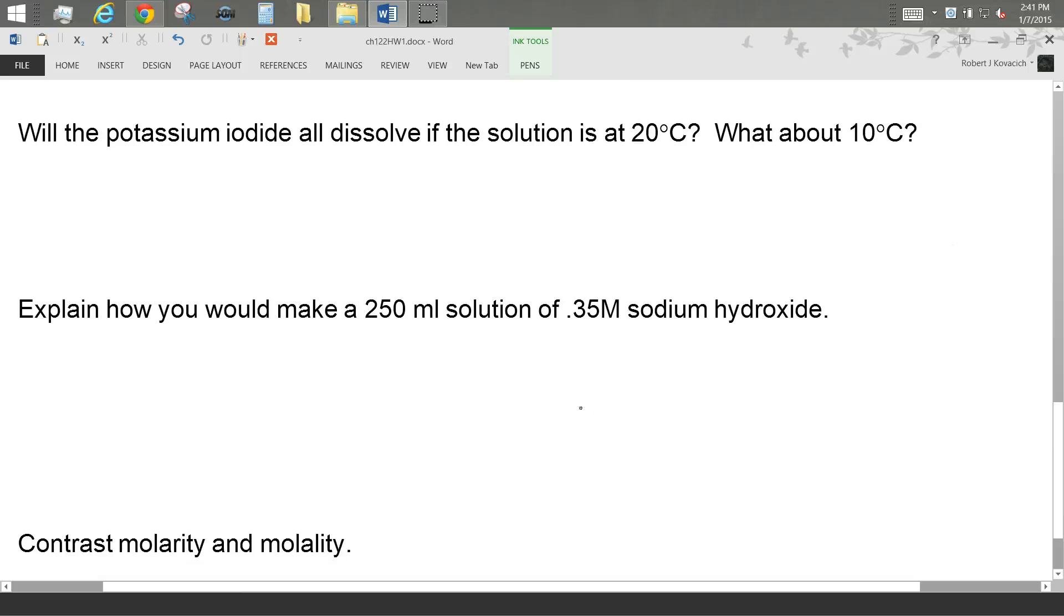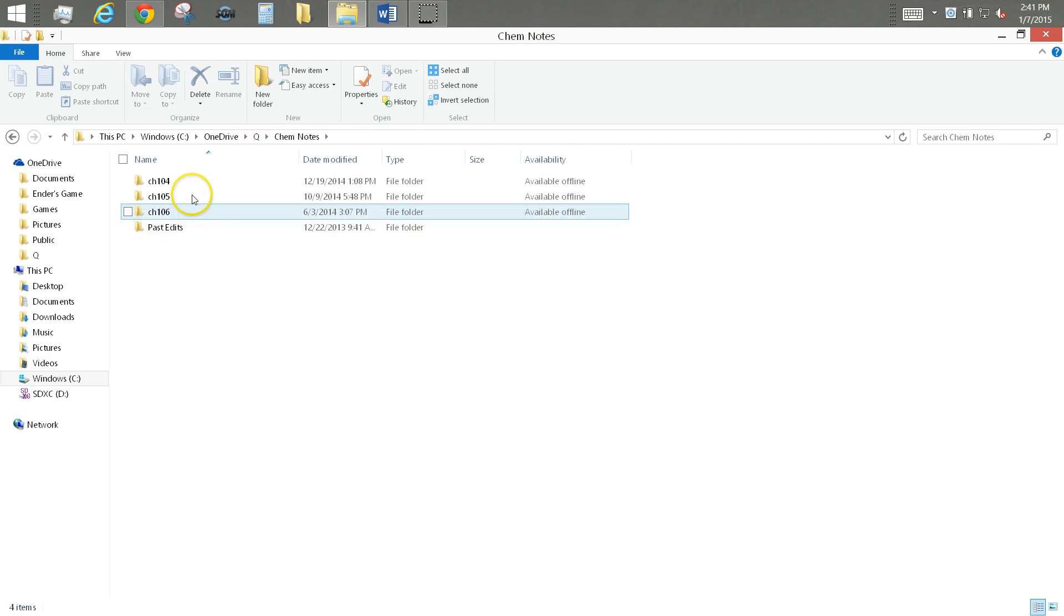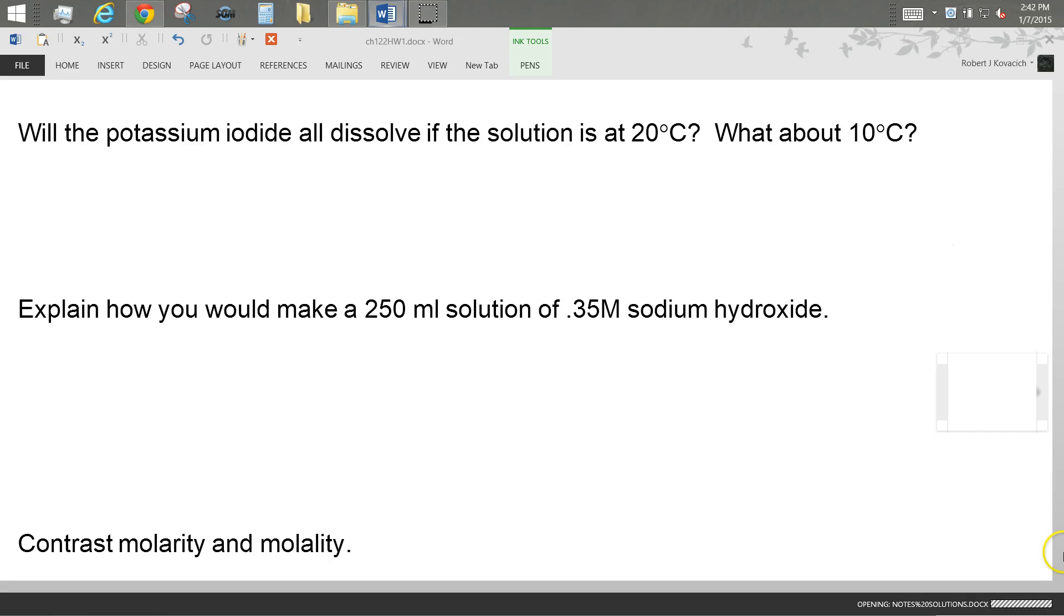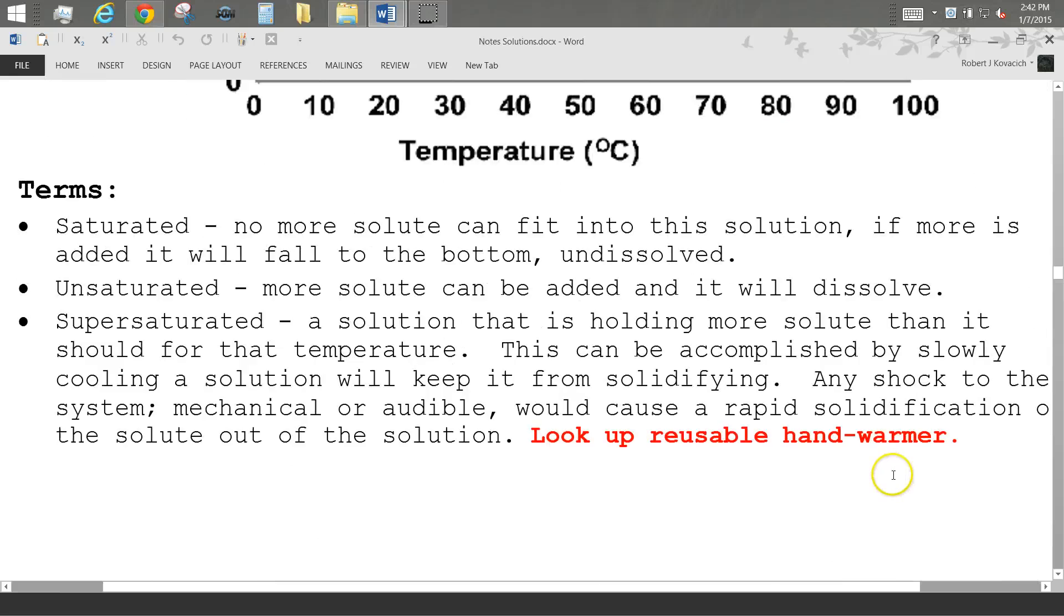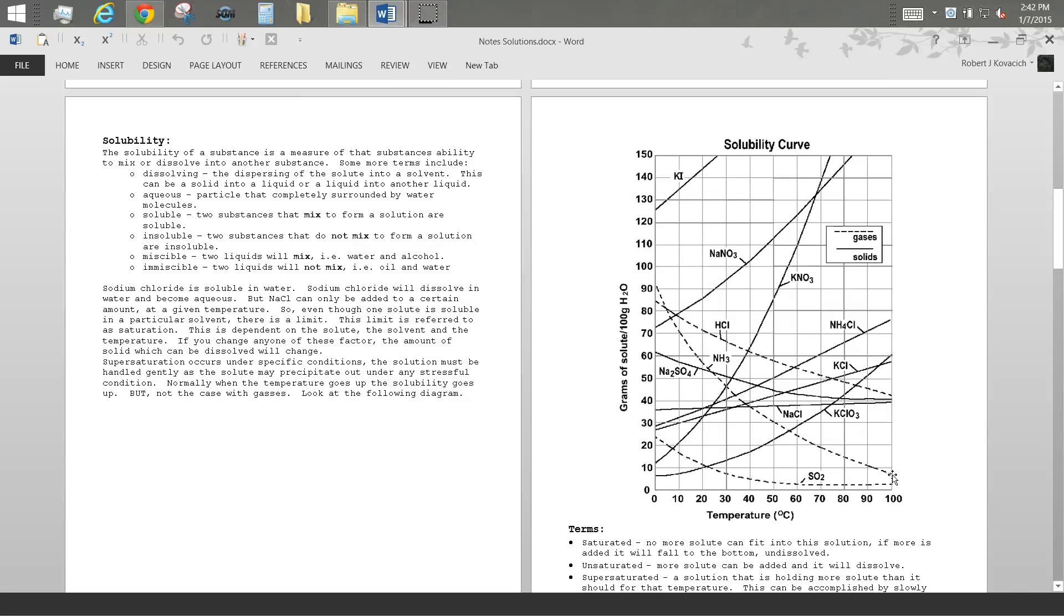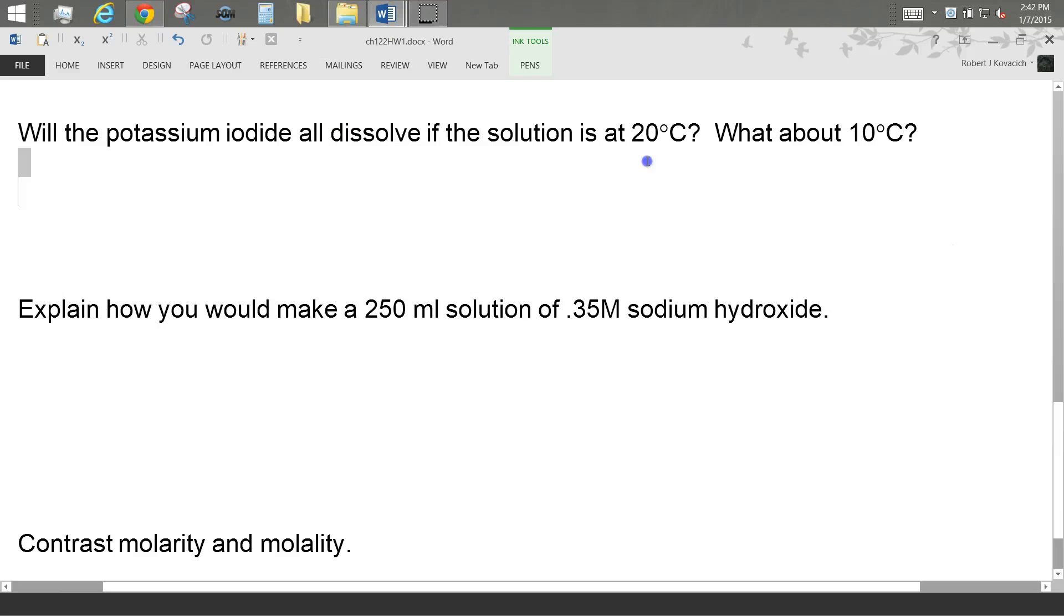Will the potassium iodide all dissolve at 20 degrees? What about at 10 degrees? Okay, so to answer that question, we're going to have to look at that diagram that I gave you in the notes. So it looks like at 20 degrees? Yes, because it looks like at 20 degrees we can get 144 grams in there. But at 10 degrees I can only get 135. So flipping back over there, we'll say, oops.